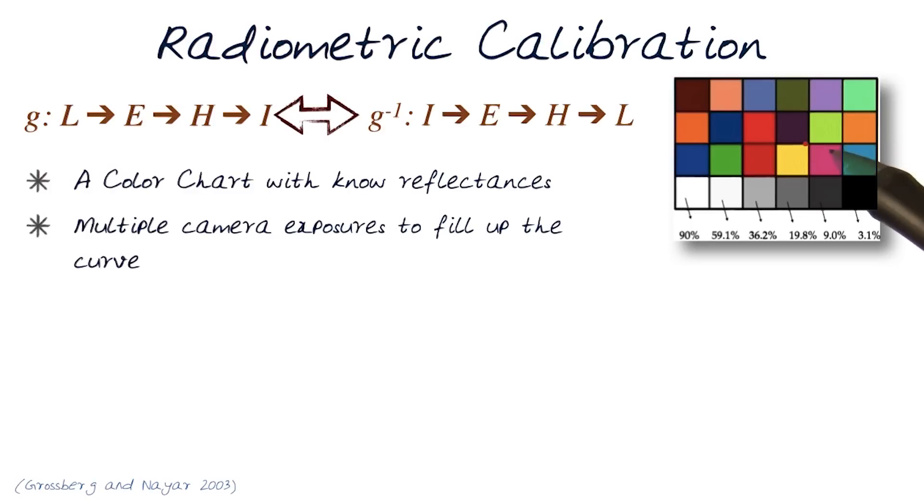What we want to do is take multiple exposures from this color chart, which basically means I'm going to take images of this. What I can do is I can take them at different exposure values. That basically means I can do things like epsilon photography. I can take images at different exposures, shutter speeds, and all that kind of stuff.